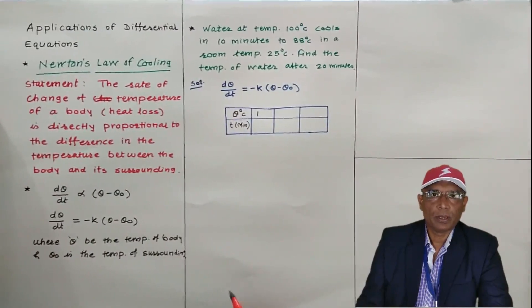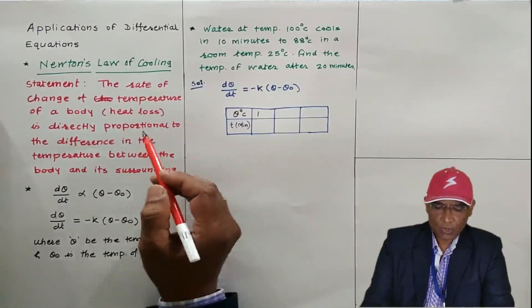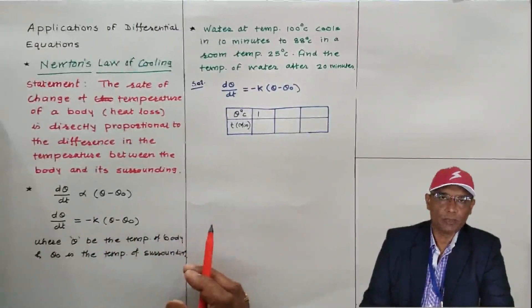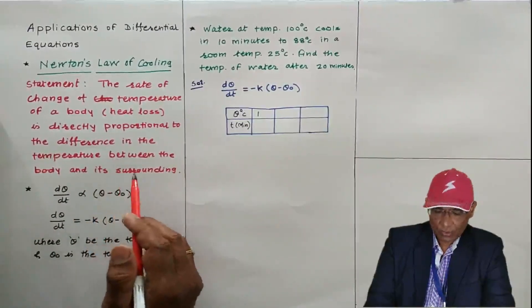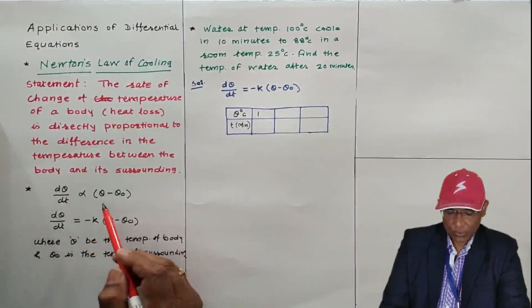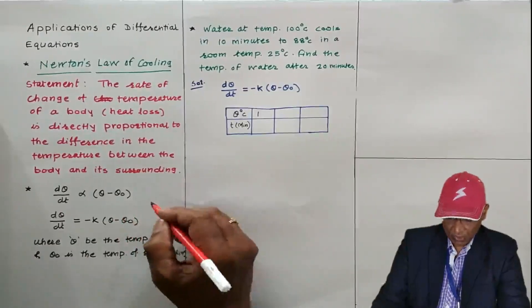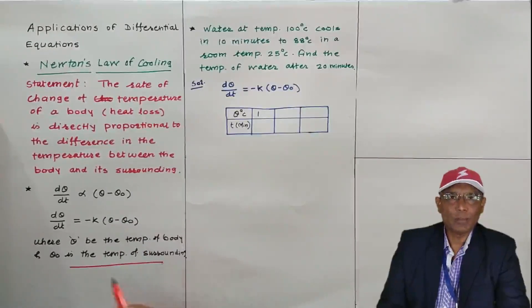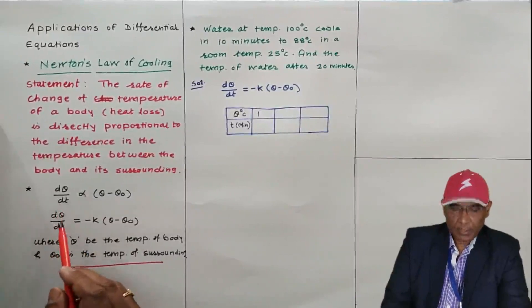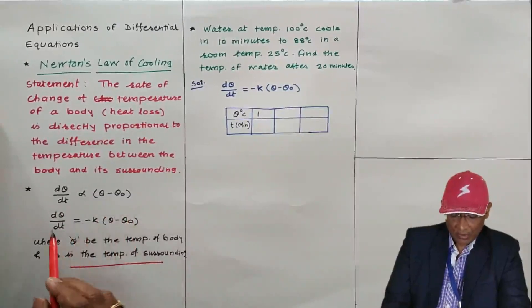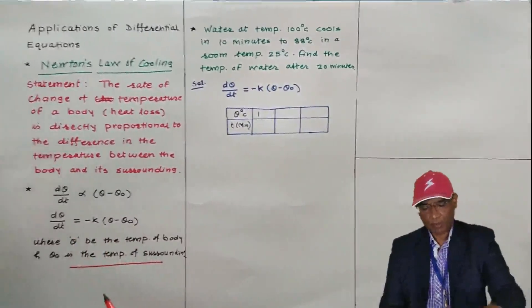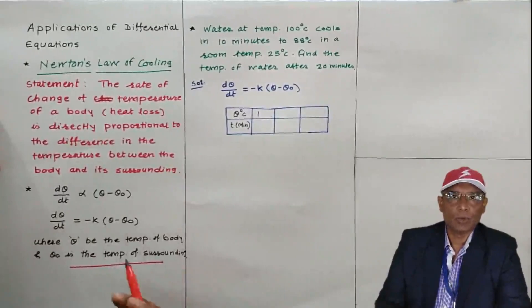Newton's law of cooling states: the rate of change of temperature of the body is directly proportional to the difference in the temperature of the body and its surrounding. Mathematically, this can be written as dθ/dt is directly proportional to (θ − θ₀), where θ₀ is the temperature of the surrounding, or room temperature, and θ is the temperature of the body. So dθ/dt = −k(θ − θ₀), where k is the proportionality constant, and the minus sign is due to the decrease in temperature, or heat loss.